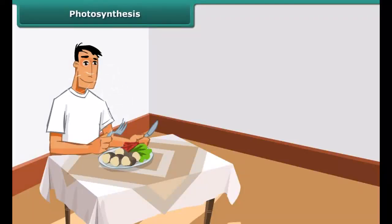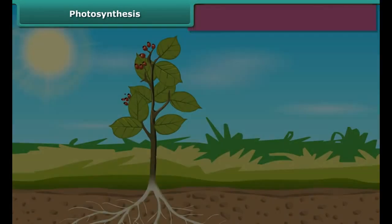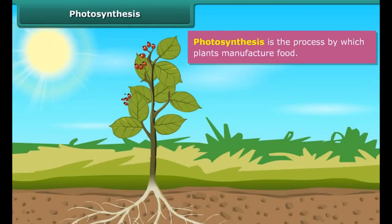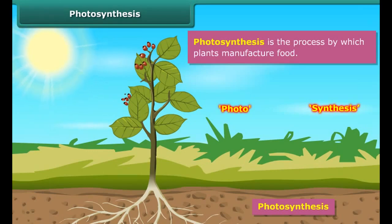Just as human beings need food to survive, plants also require food to live. Photosynthesis is the process by which plants manufacture food. The word photosynthesis is derived from two words: photo, which means light, and synthesis, which means preparation. Thus the word photosynthesis means producing with the help of light.